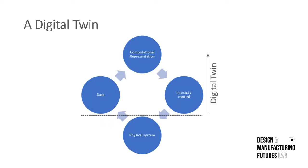Closer inspection of that definition allows us to break down a digital twin into a number of elements or characteristics. In particular, shown here, we've got the physical system, but then we've got an interface where we have to capture the data — real-time data that will feed into our computational representation. There needs to be an interface to collect that data and a means to handle and synchronize it, taking that data and updating the computational representation to reflect the state of the physical system.